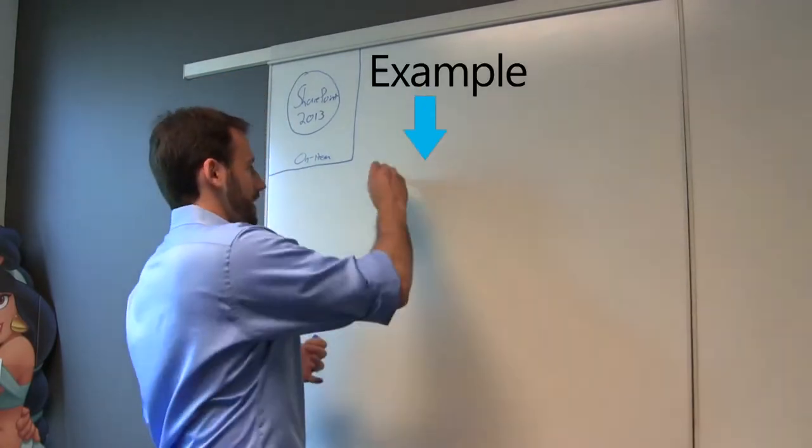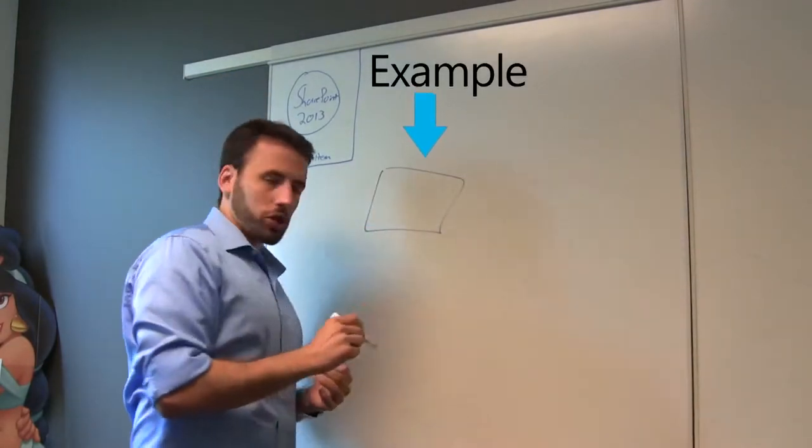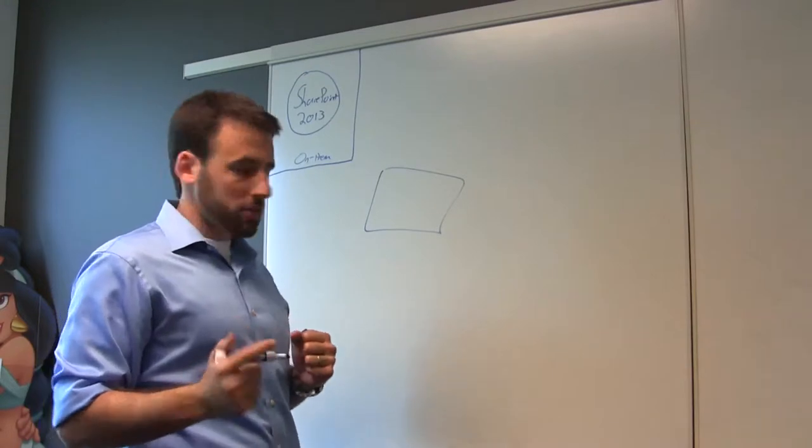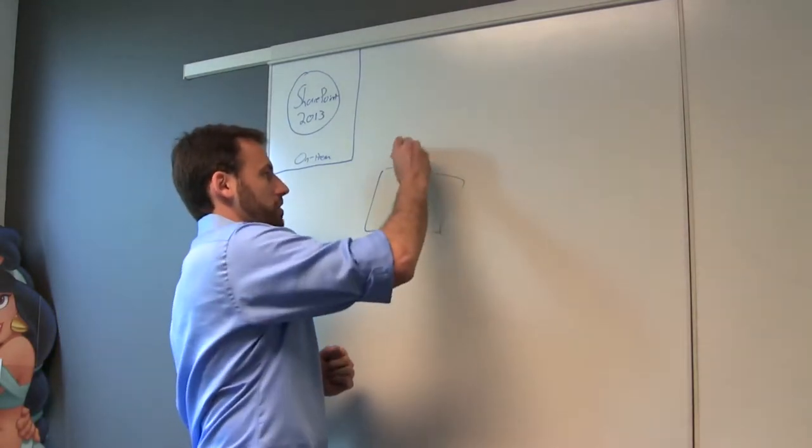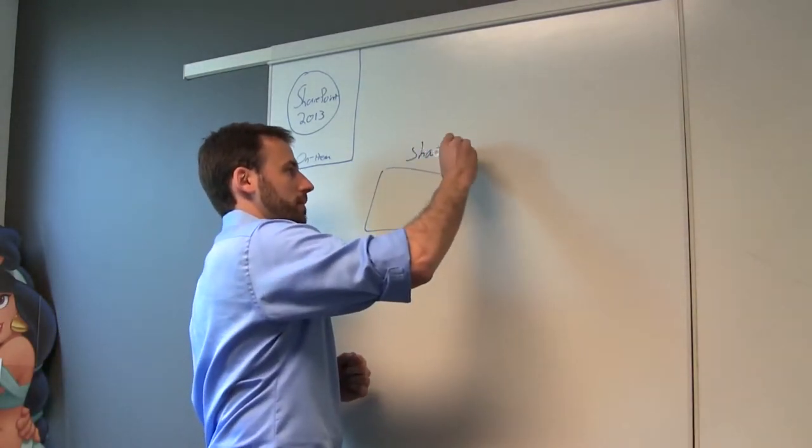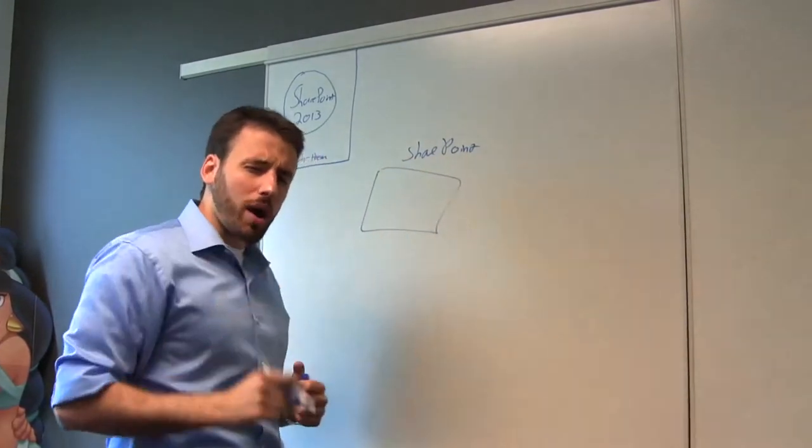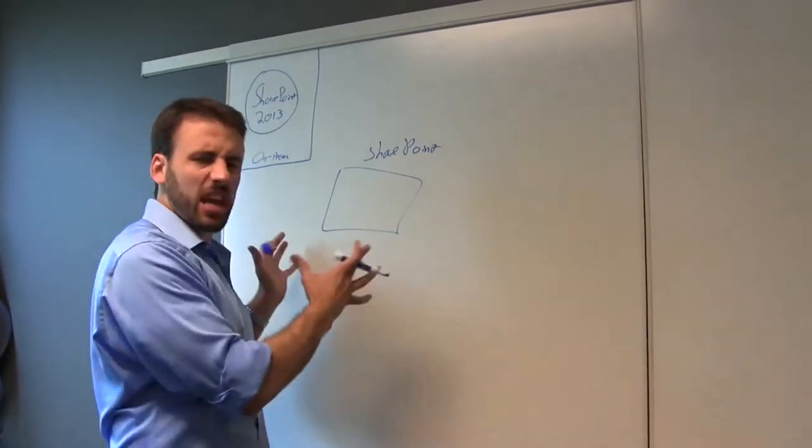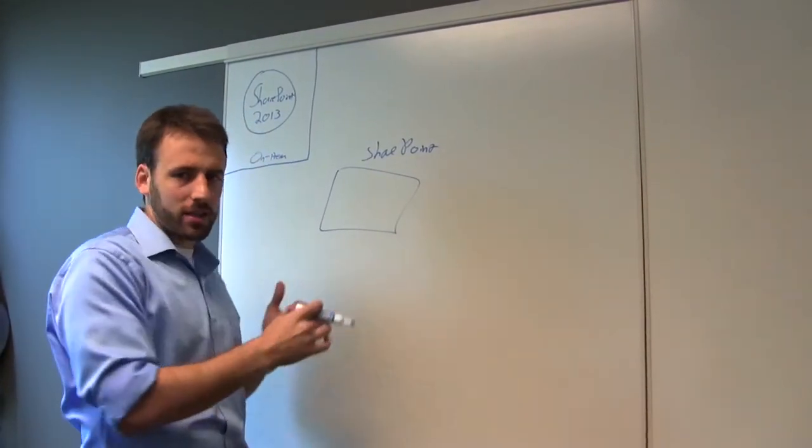So in an example of maybe a dev test scenario, you could go up and spin up a virtual machine in Windows Azure that could have the entire SharePoint deployment running on top of one machine. And this may be what you do on-premises. This may be how you save machine space. You put them all in one box.